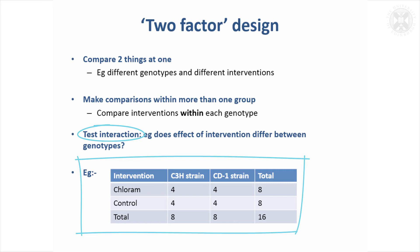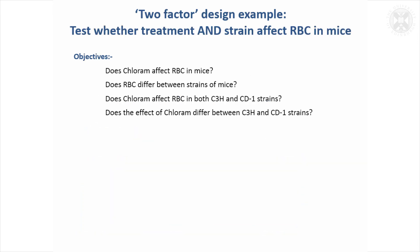It can be quite a powerful study design. In this example we can see if chloram affects red blood cell count, we can see if red blood cell count differs between the strains of mice, we can see if it affects red blood cell counts in each strain individually, and we can also see if that effect differs between the two strains. So there are quite a few questions we can ask in this one two-factor design.